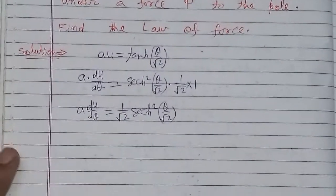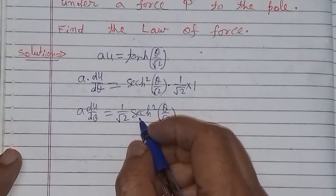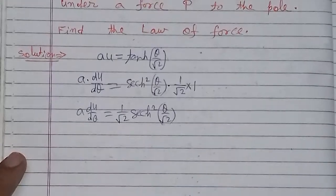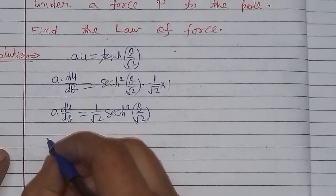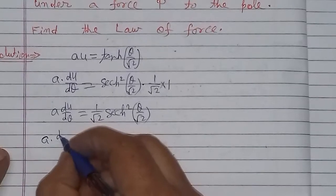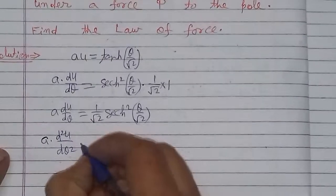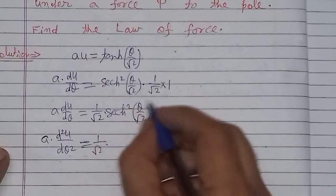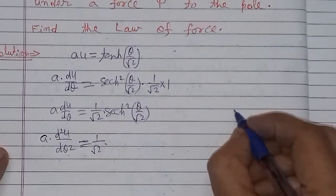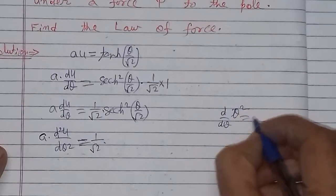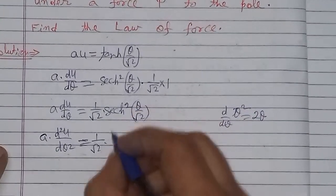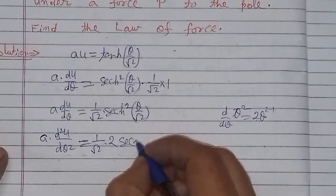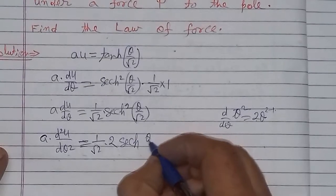Ab second derivative ki zaroorat hoti hai, d2u over d theta square. Toh isko ek baar aur differentiate karenge, again differentiating with respect to theta. Toh a into constant bahar ho chuka. Aur iska differentiation d2u over d theta square ho chuka. One upon root 2 constant hai. Ab sec hyperbolic square ka differentiation: power aagay jayegi, ek kam ho jaayegi, lekin yeh theta nahi tha, balki sec tha. Toh sec ka dobaara differentiation karna hoga.